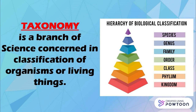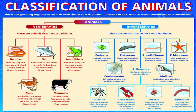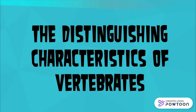Taxonomy is a branch of science concerned with the classification of organisms or living things. Classification of animals is the grouping together of animals with similar characteristics. Animals can be classed as either vertebrates or invertebrates.